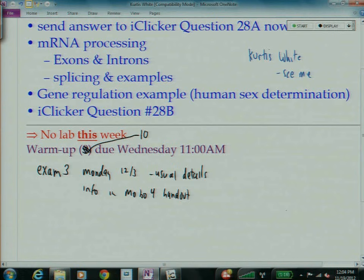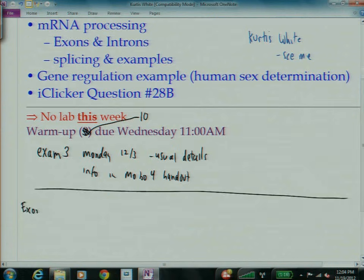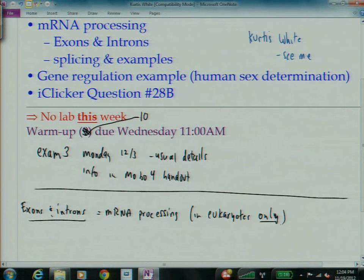Let me talk about exons and introns. This is otherwise known as mRNA processing, and that's in eukaryotes only. Bacteria don't do this.